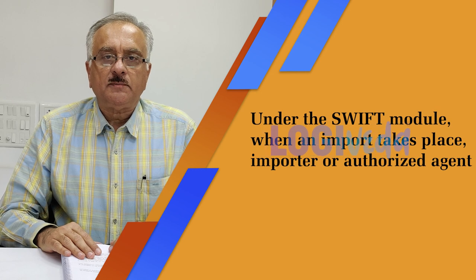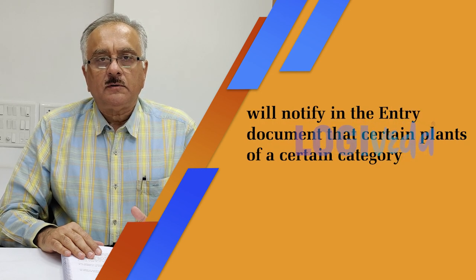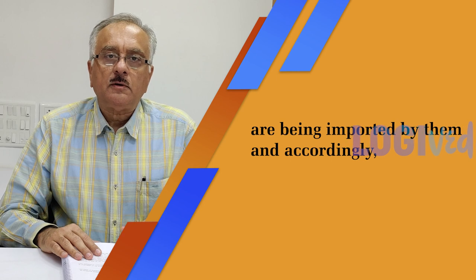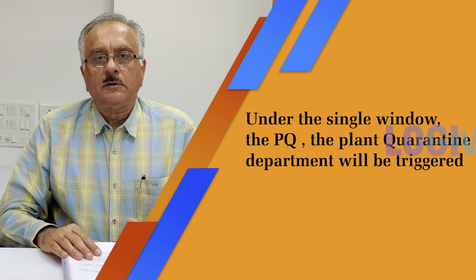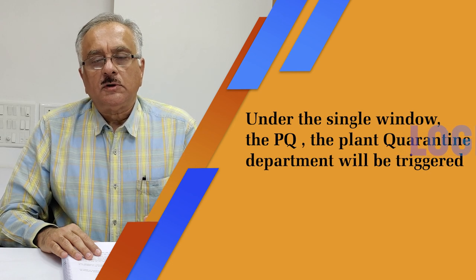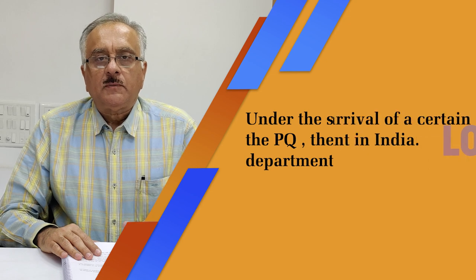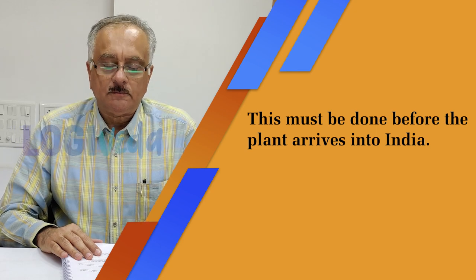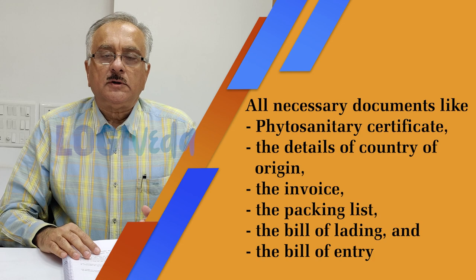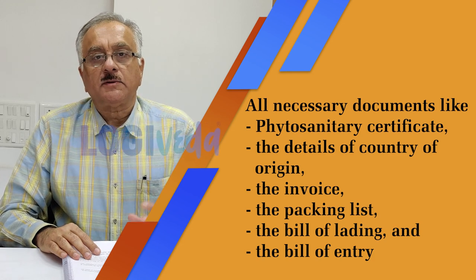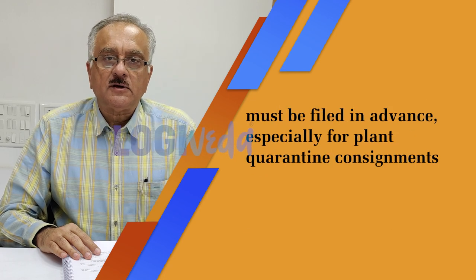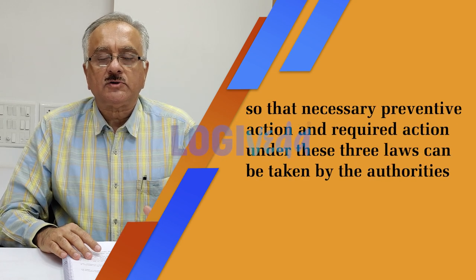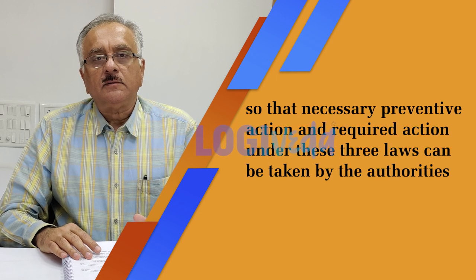Under the SWIFT module, when an import takes place, the importer or the authorised agent will notify in the E-Sanchit document that certain plants of a certain category are being imported, and accordingly under the single window, the PQ — that is the Plant Quarantine department — will be triggered about the arrival of a certain kind of plant in India. This must be done before the plant arrives in India. All supporting documents like the phytosanitary certificate, the details of country of origin, the invoice, the packing list, the bill of lading, and of course the bill of entry must be filed in advance, especially for plant quarantine consignments.